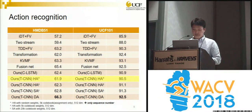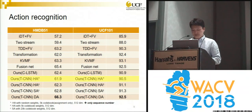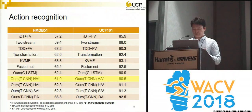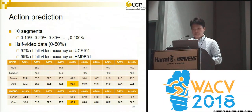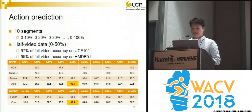An interesting result is that the randomly initialized features — highlighted in the table — also show somewhat reliable performance. So even with just random numbers as the sequence, we can achieve reliable performance. For the action prediction task, we train 10 different CNNs with limited data, and with only half the amount of video data, our model can reach over 95% of the accuracy achieved with full videos.